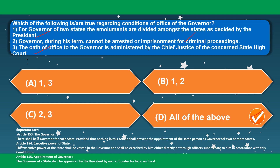Some important constitutional facts: Article 153 — there shall be a Governor for each state, and nothing prevents the appointment of the same person as Governor for two or more states. Article 154 — the executive power of the state shall be vested in the Governor. Article 155 — the Governor of a state shall be appointed by the President by warrant under his hand and seal.